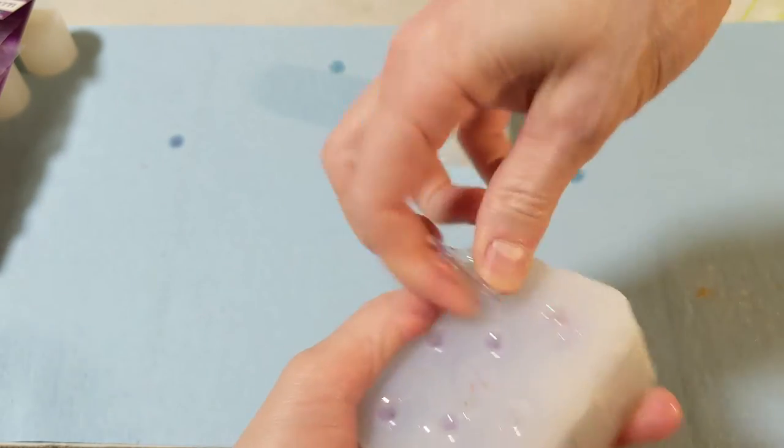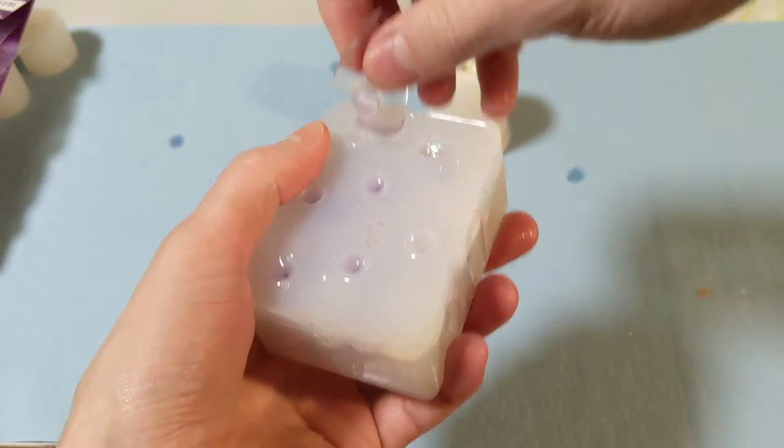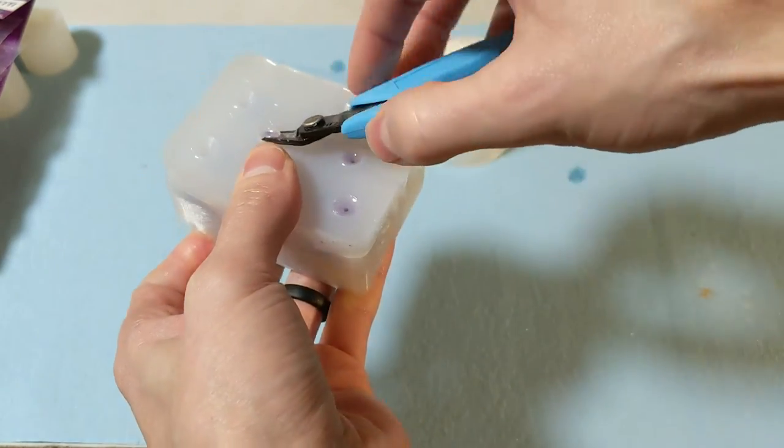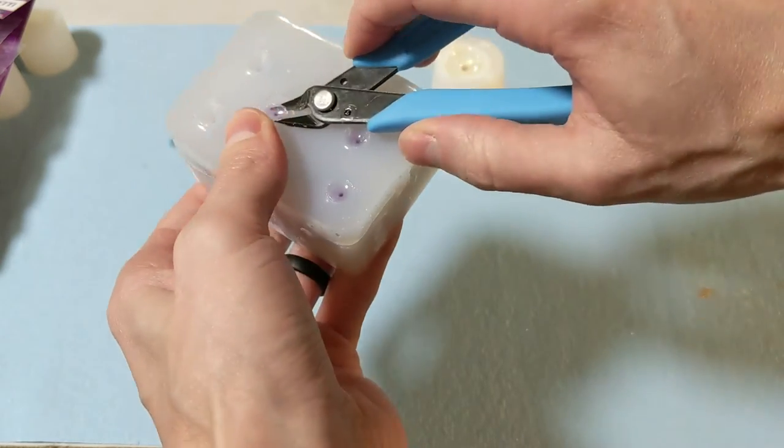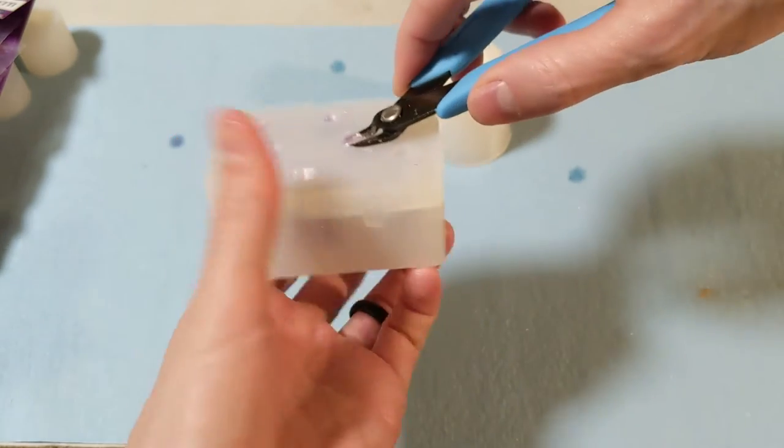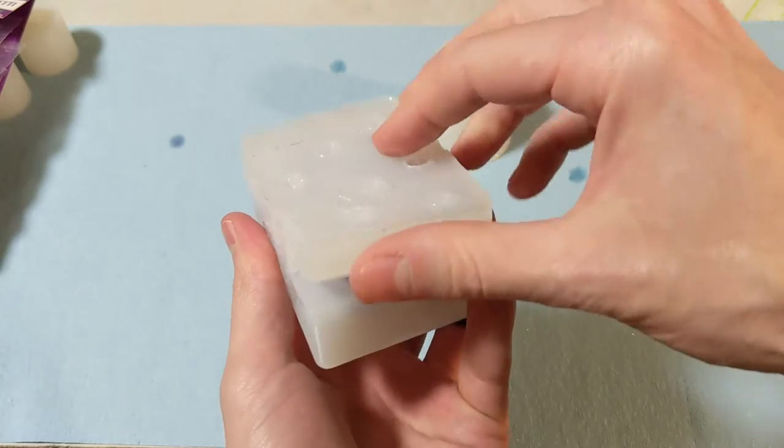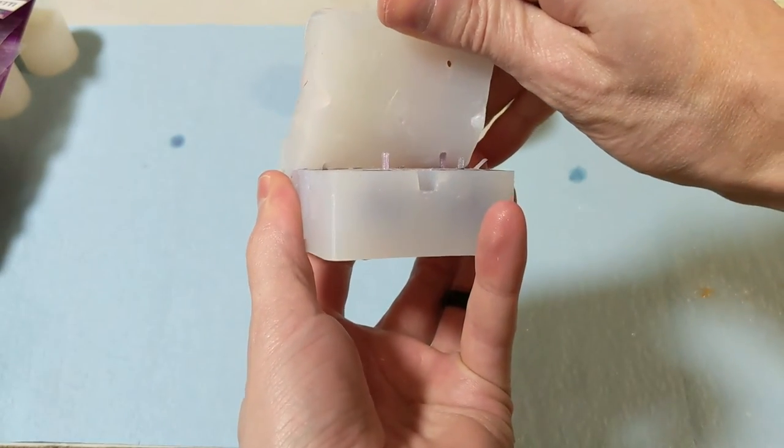After my resin has cured in the pressure pot, I'll go ahead and remove my sprues from my hybrid sprue cap mold, and then I will see what those look like. Usually twisting makes it come off fairly easy. Sometimes I do just use the cutters to just cut the little top off.